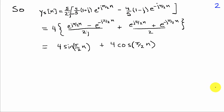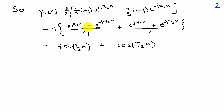Combining these two terms using our coefficients, the steady-state response y_s[n] = (5/2j) · (4/5)(1+j) e^(jπ/2 n) - (4/5)(1-j) e^(-jπ/2 n). The 5's cancel, and separating real and imaginary parts: the real parts give 4 · (e^(jπ/2 n) - e^(-jπ/2 n)) / 2j = 4 sin(π/2 n), and the imaginary parts give a cosine term.